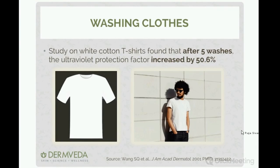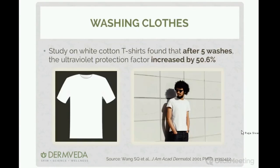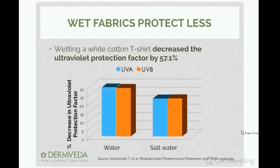If you or your child is going out and you have a choice between a brand new shirt and one that's been pre-washed, the pre-washed one affords some extra protection. So choose something pre-washed, a little bit thicker, and go for a color closer to blues or reds rather than white. Finally, when a shirt gets wet — say a white cotton t-shirt in the pool — it decreases the UV protection factor by about 57%, because the wet fabric becomes more transparent to UV light.